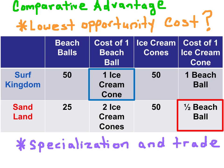For the opportunity cost of ice cream, we reverse the fraction. So now we have 50 beach balls in Surf Kingdom divided by 50 units of ice cream, giving us an opportunity cost of one beach ball. In Sandland, we take 25 beach balls divided by 50 ice cream cones for an opportunity cost of half a beach ball. Sandland has the lower opportunity cost in ice cream production, so they have the Comparative Advantage.